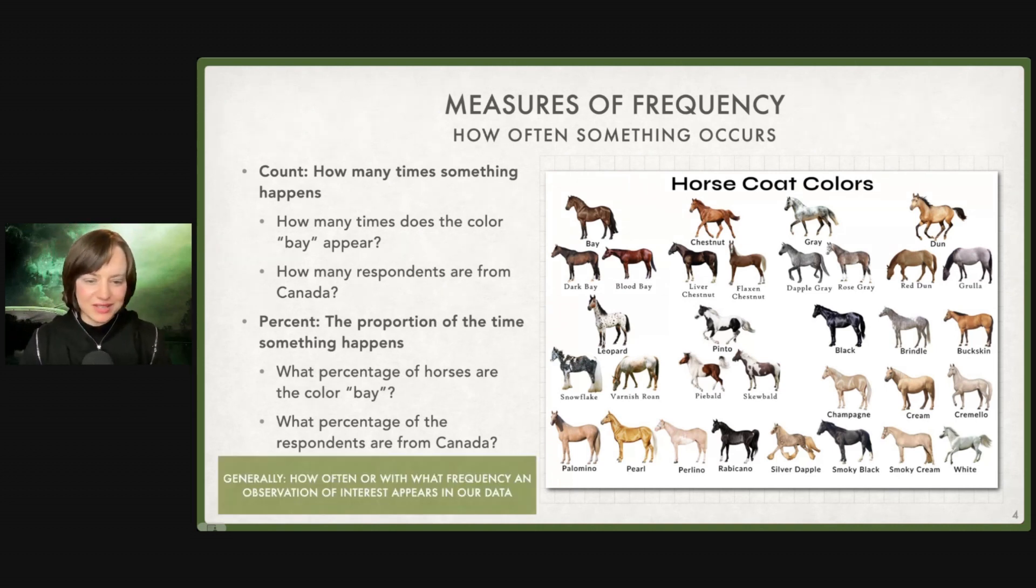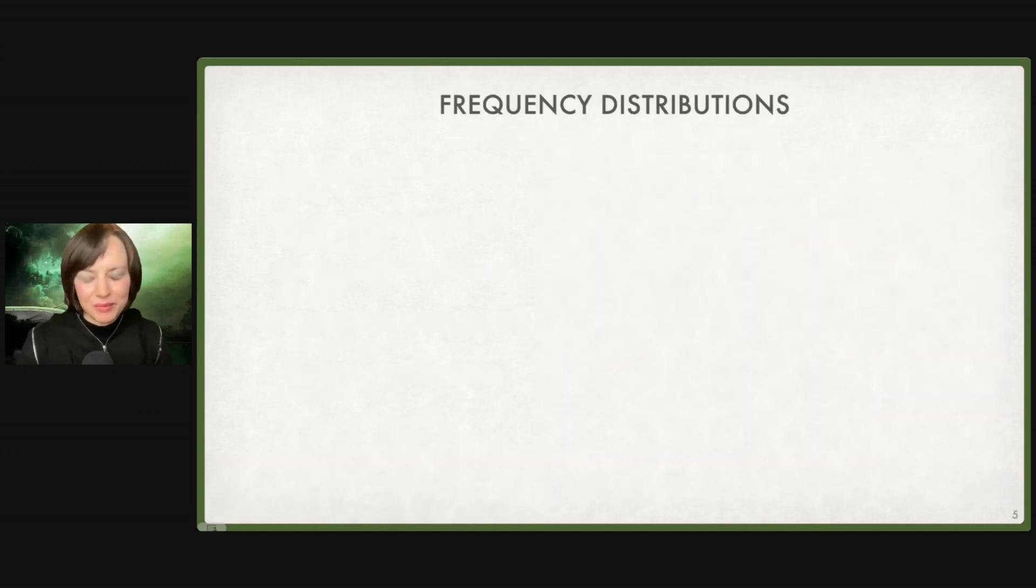Of course, we also have percentages, the proportion of time that something happens. What percentage of respondents are from Canada? What percentage of horses are color bay? Generally, with measures of frequency, we are wondering how often or with what frequency does something happen that we're interested in? How often does someone score a five in their performance evaluation? How often do people indicate that they are very satisfied with their work at our company?